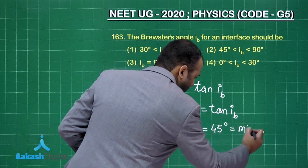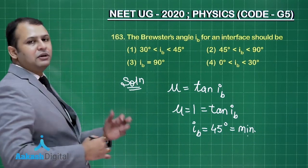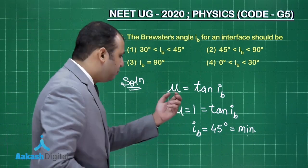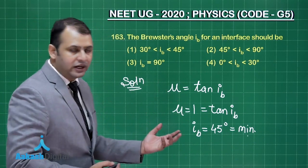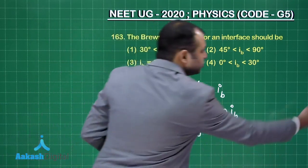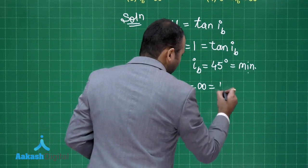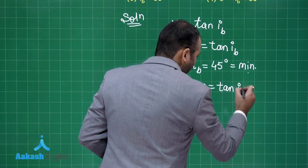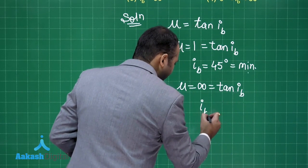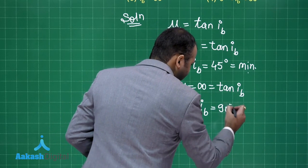This would be the minimum value. Now what can be the maximum value? This μ can have any maximum value. Let's take it as infinite. So if you take μ as infinite, μ equals infinite, that equals tan IB. In that case IB will be equal to 90 degrees.